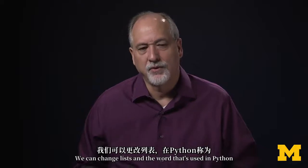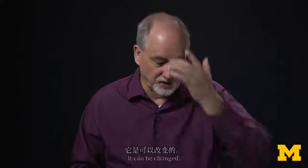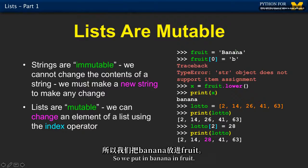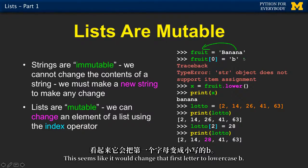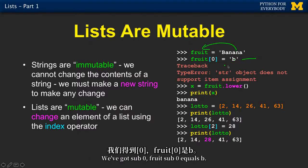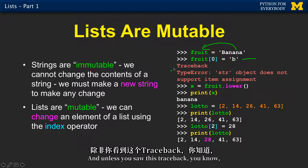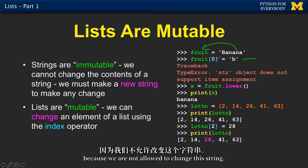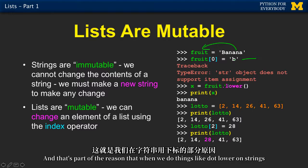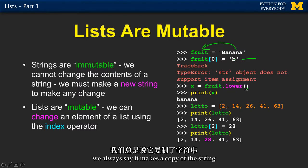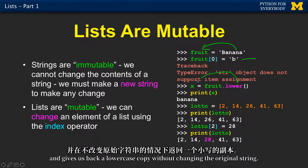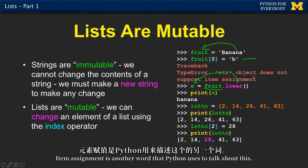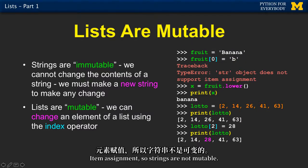We can change lists. The word used in Python is 'mutable' — it means changeable. Some things are not mutable, like strings. If we put 'Banana' in fruit and try to set 'fruit sub zero' equals 'b' to change the first letter, we get a traceback — we're not allowed to change the string. That's part of the reason that when we do things like dot lower on strings, it makes a copy and gives us back a lowercase copy without changing the original string. Strings are not mutable.